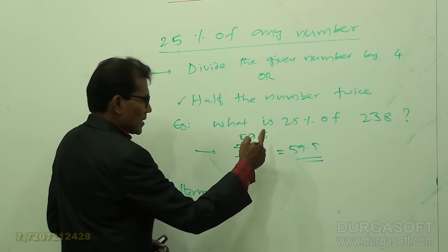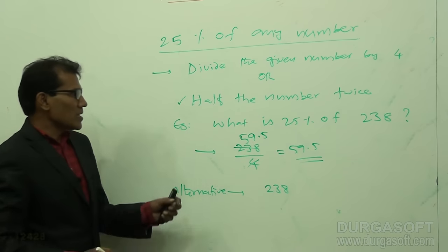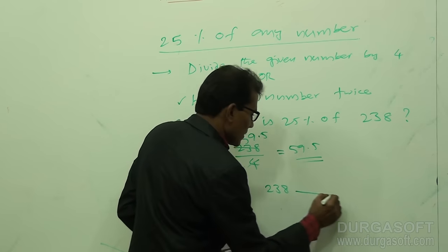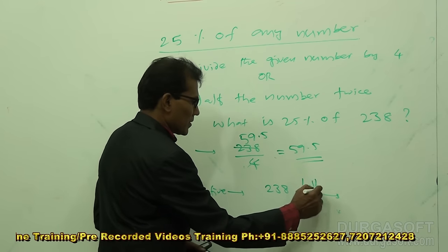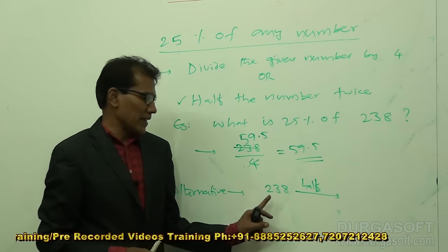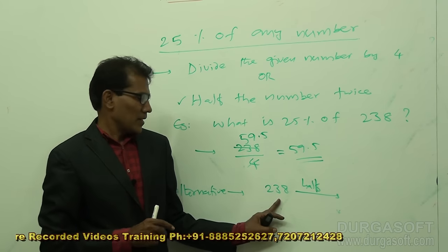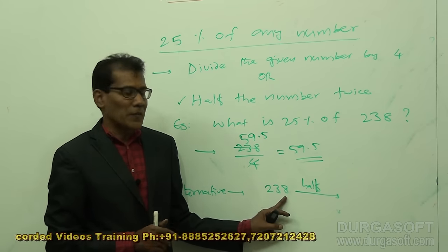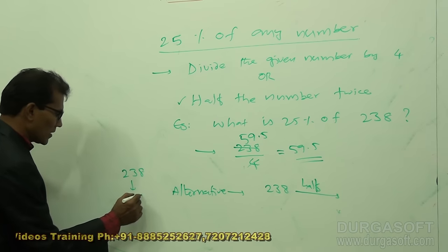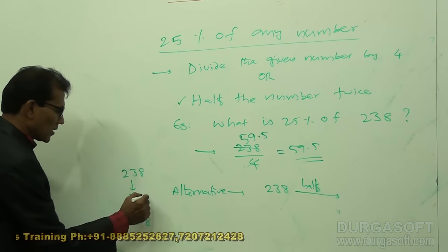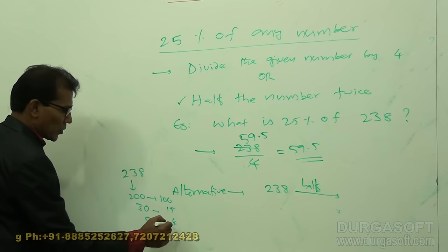To find 25% of any number without pen and paper, use the halve-twice technique. 238 halved: 200 half is 100, 30 half is 15, 8 half is 4 — giving 119. Halve 119 again to get 59.5. This can all be calculated in your mind.